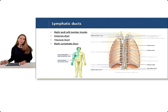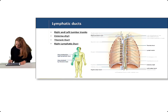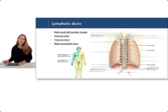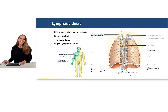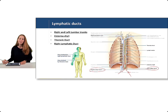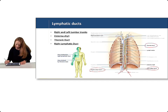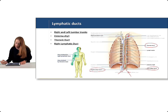I want you to know the major ducts of the lymphatic system, because this helps to understand how lymph drains towards the subclavian veins. The right and left lumbar trunks bring lymphatic fluid from the right and left lower limbs. That fluid then travels up to a large structure called the cisterna chyli, where it merges as it moves up into the thorax. Moving into the thorax, the fluid converges into the thoracic duct, which travels up through the thorax towards the left subclavian vein.